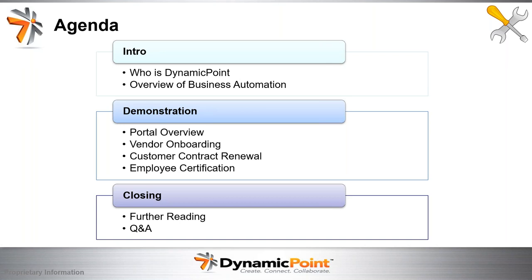For our agenda today, we are going to do a quick intro on who DynamicPoint is and what we mean by business automation. From there, we'll go right into a demonstration discussing the overview of the portal application foundation, as well as the various aspects of business automation: vendor onboarding, customer contract renewal, and employee certification — the three examples we'll show today. In closing, we'll leave you with some further reading as well as Q&A time.